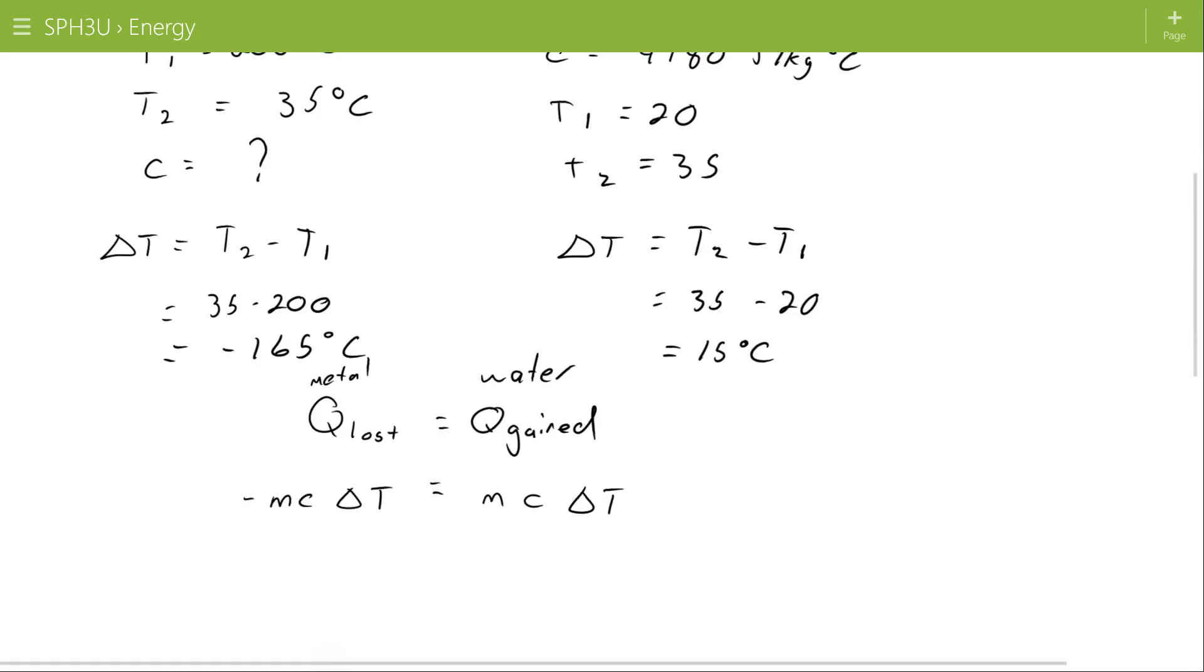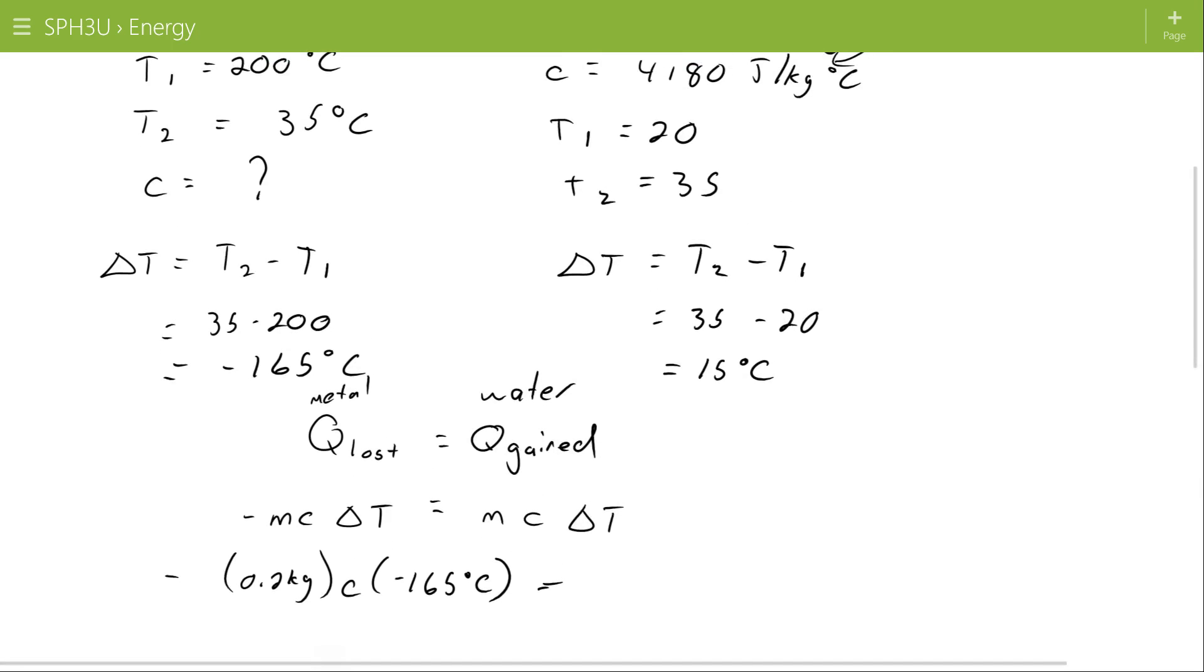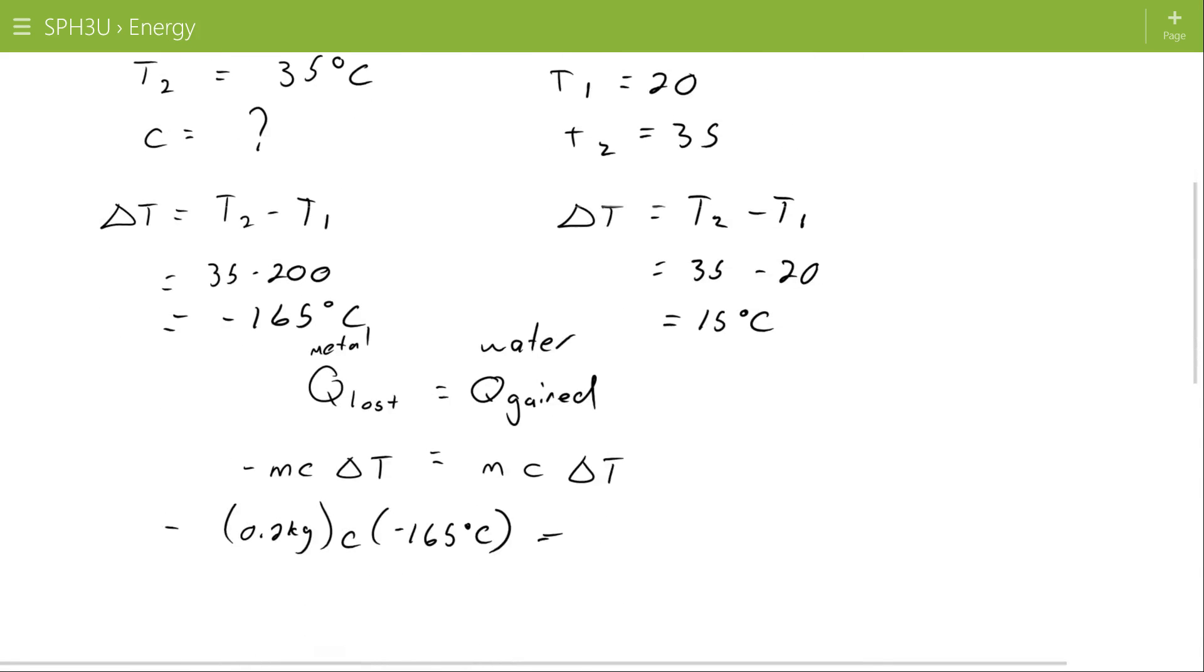So transferring numbers down: 0.2 kilograms, negative at the front, specific heat I don't know, and a change of temperature of negative 165 degrees C. And over here I will have a mass of water of 0.4 kilograms, a specific heat of 4,180 joules per kilogram degrees C, and a delta T of 15 degrees C.